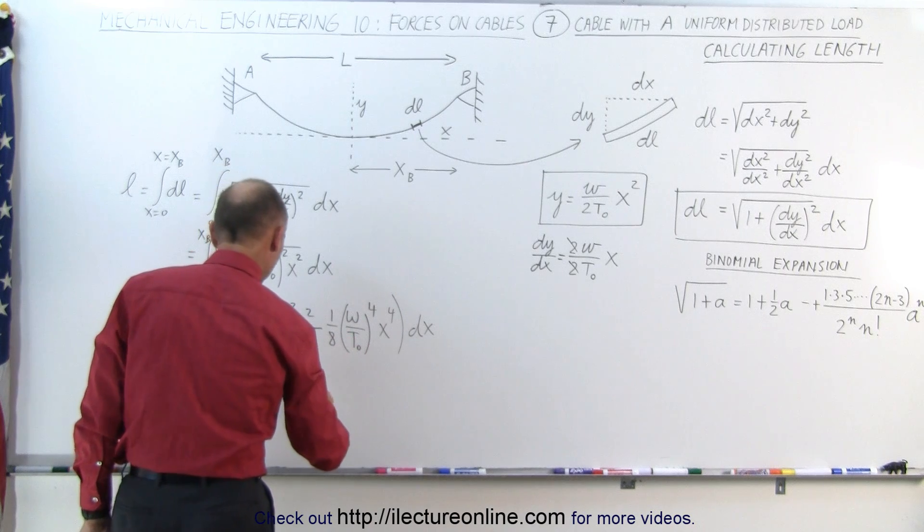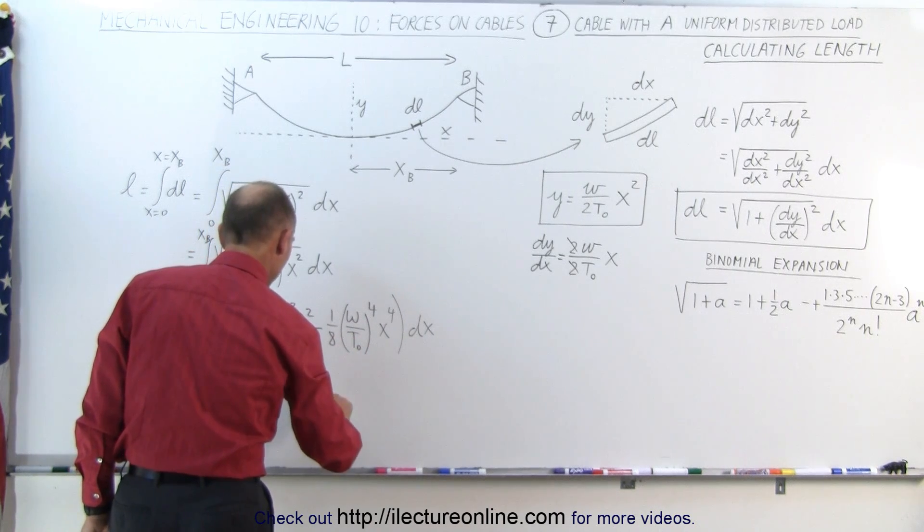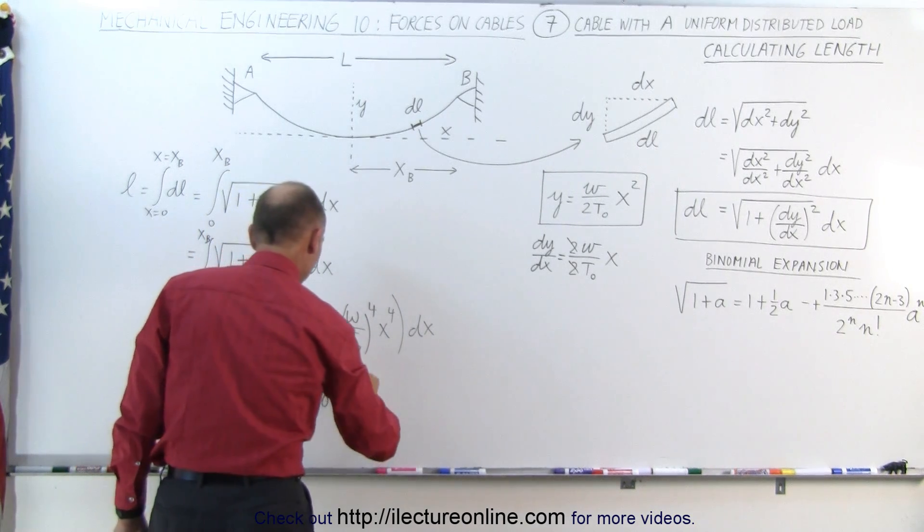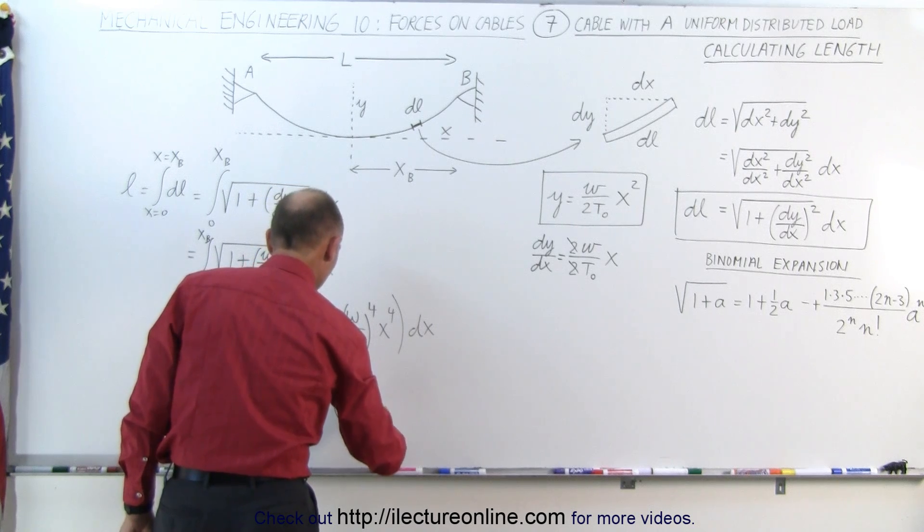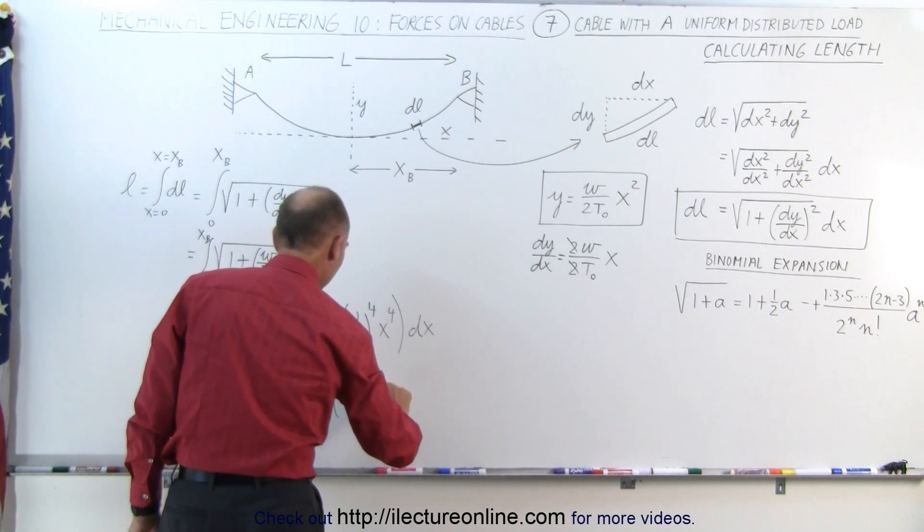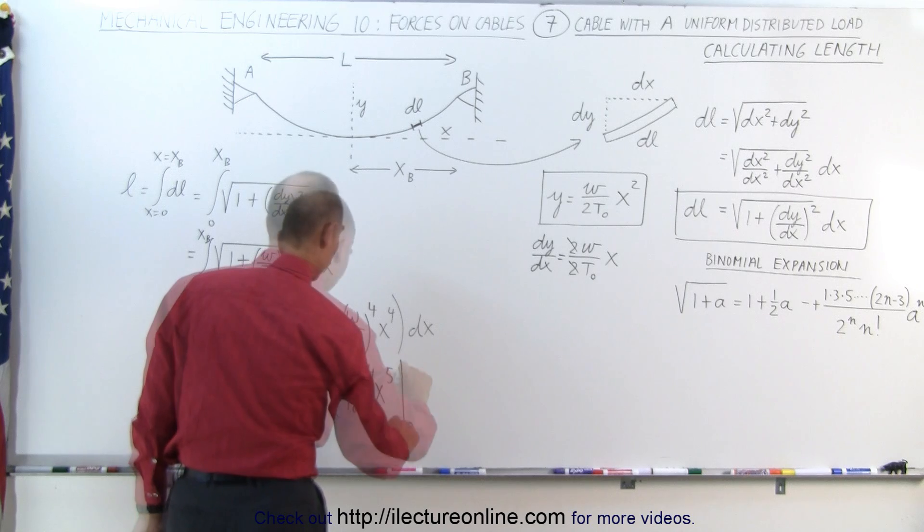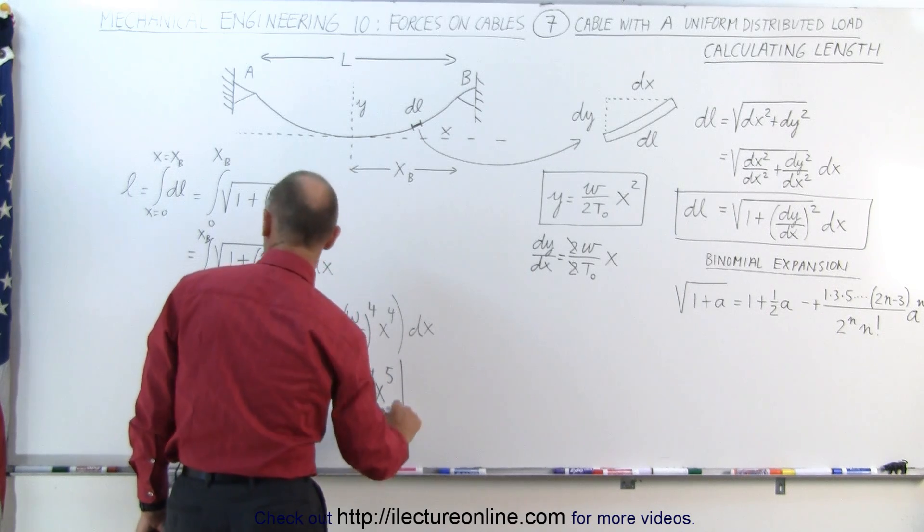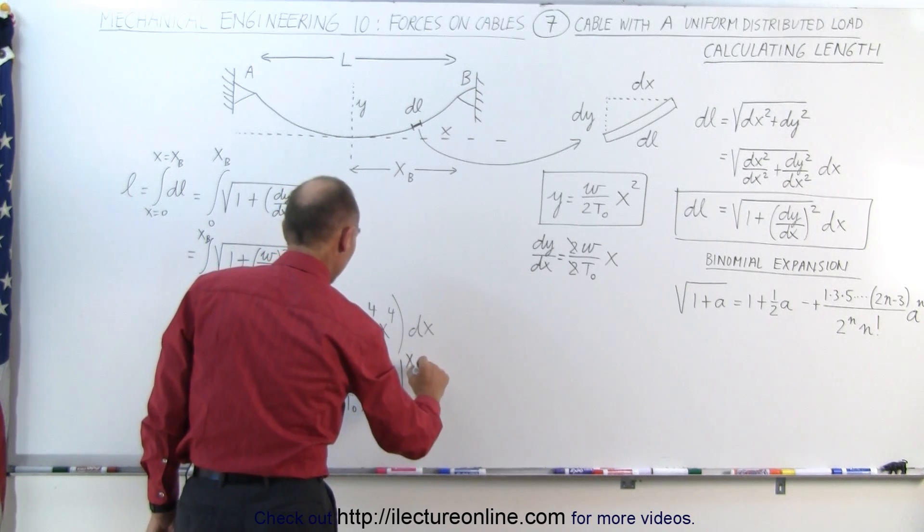So we bring this to the bottom, that becomes minus 1 over 5 times 8, which is 40, times (omega/T sub naught) quantity to the fourth power, X to the fifth power, evaluated from 0 to X sub B.